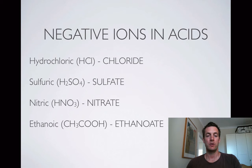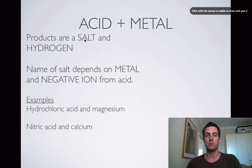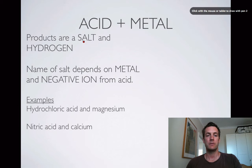Let's have a look at the first group of reactions: acids reacting with metals. Whenever an acid reacts with a metal you're always going to produce a salt and hydrogen. There are metals that acids won't react with, such as gold. Silver doesn't react terribly well and copper won't react with a lot of dilute acids, but if you do have a metal that reacts with an acid it will produce a salt and hydrogen, and the name of that salt will depend on the metal you've used and the negative ion from the acid.